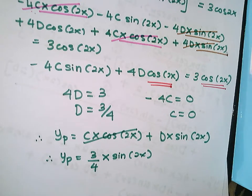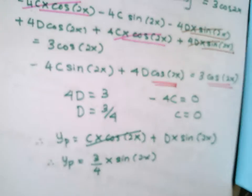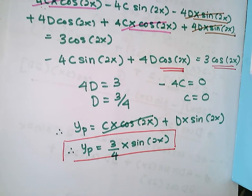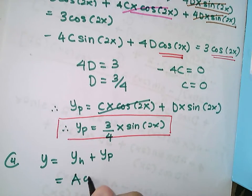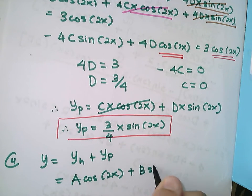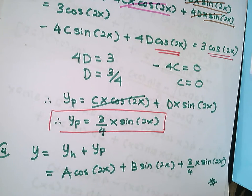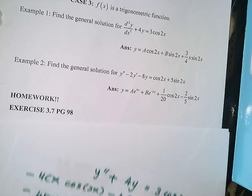Now you have yh = A cos(2x) + B sin(2x) and yp = (3/4)x sin(2x). The general solution is y = yh + yp = A cos(2x) + B sin(2x) + (3/4)x sin(2x). In the next video, I will show you how to solve the second example. See you in the next video.